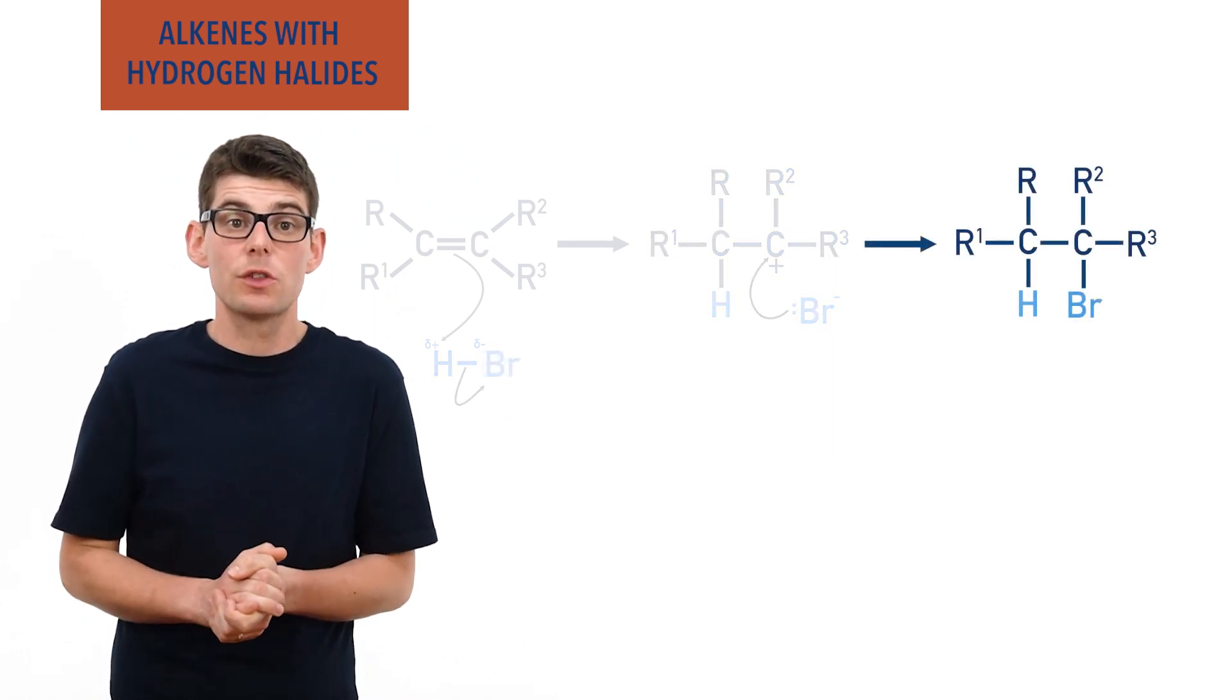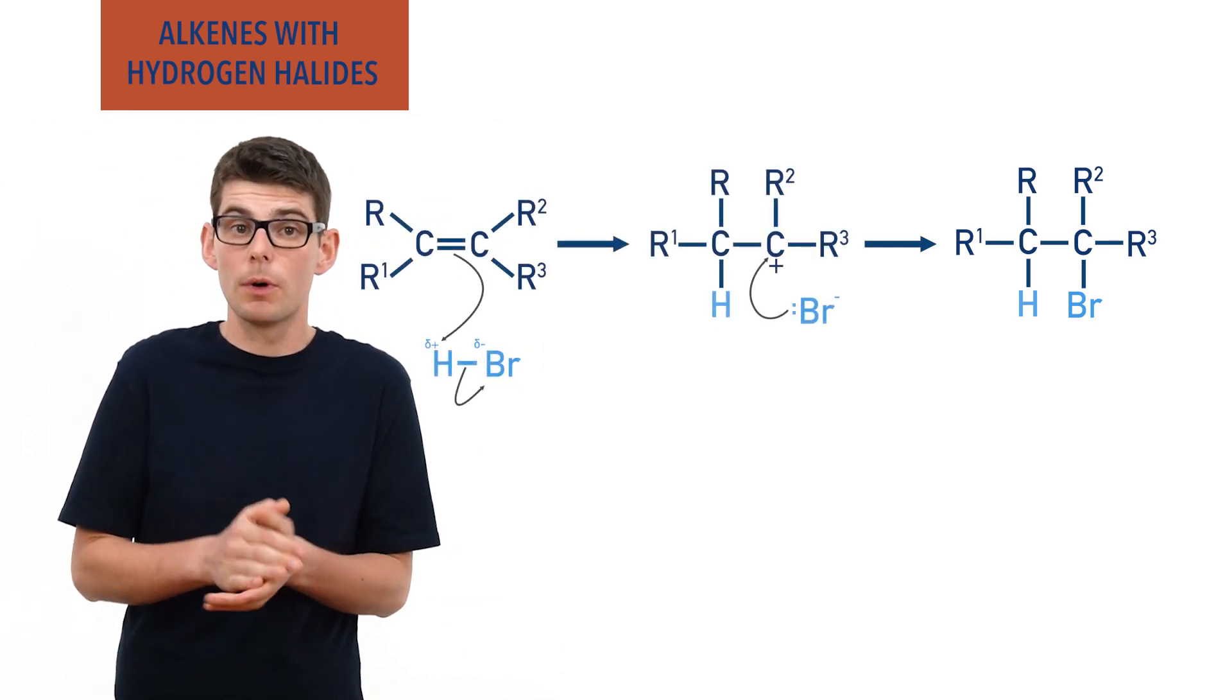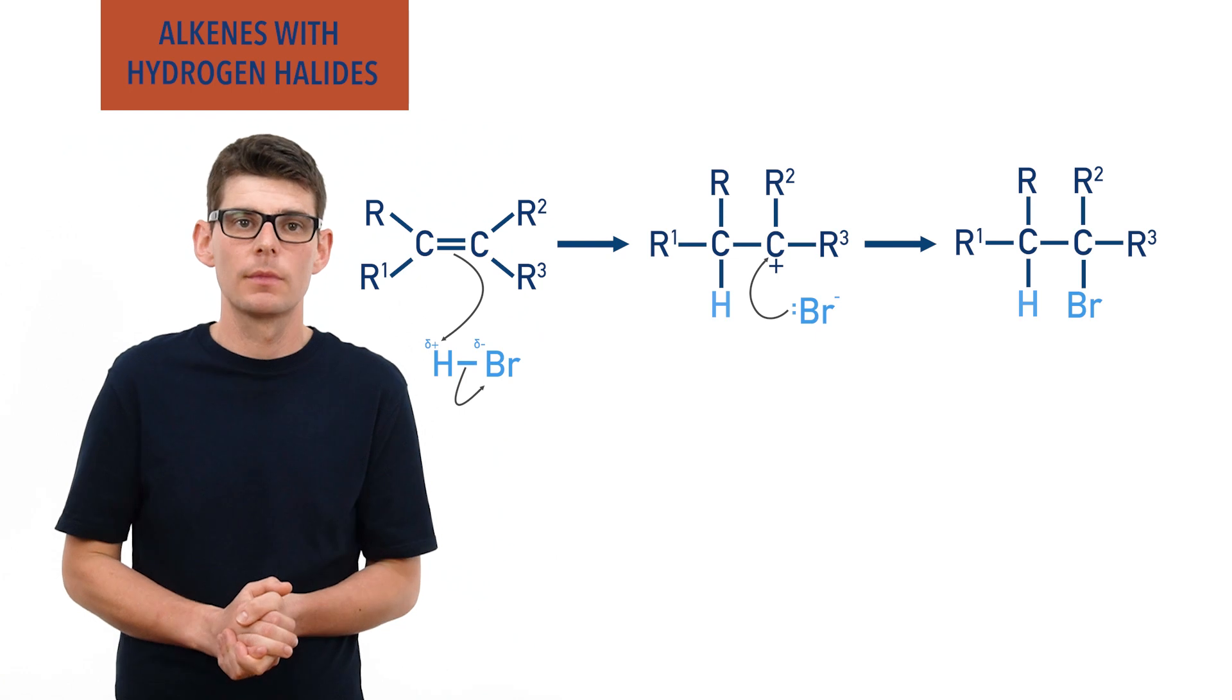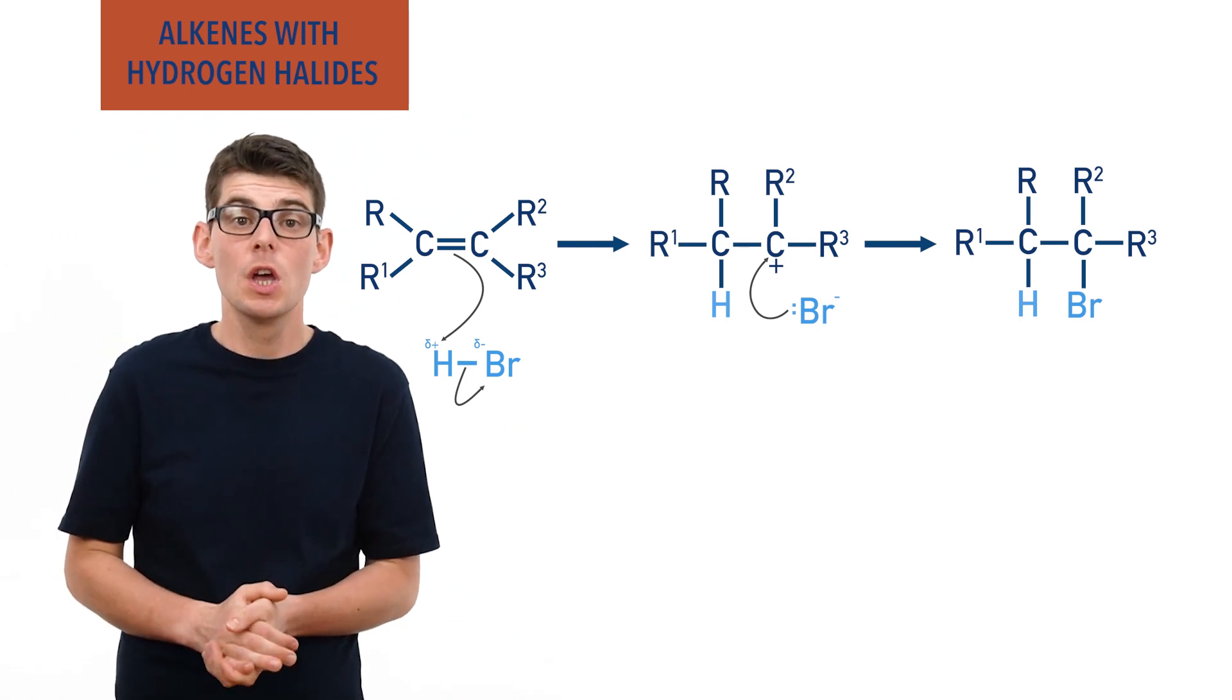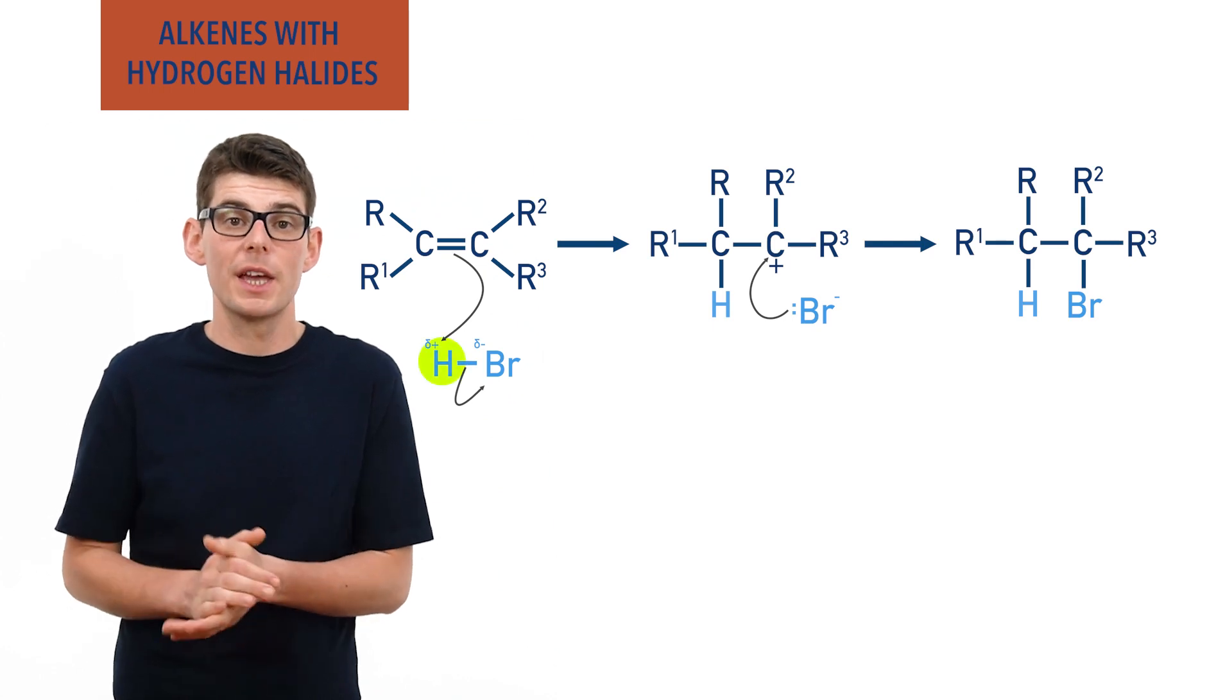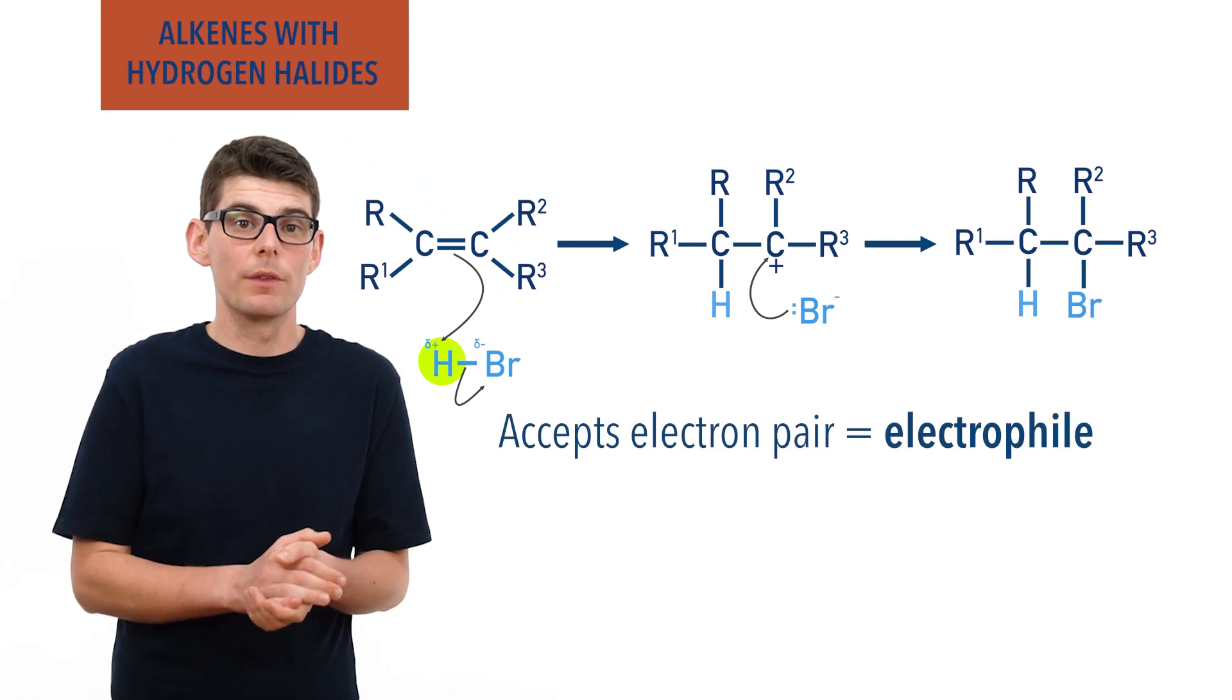The hydrogen and halogen from the hydrogen halide end up bonded to the two different carbon atoms from the double bond in the alkene. The species that initially attacked the carbon-carbon double bond was the partially positive hydrogen from the hydrogen halide and it acted as an electrophile, accepting a pair of electrons, making the reaction electrophilic.